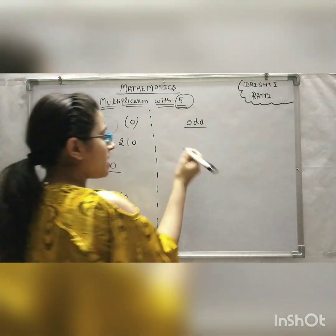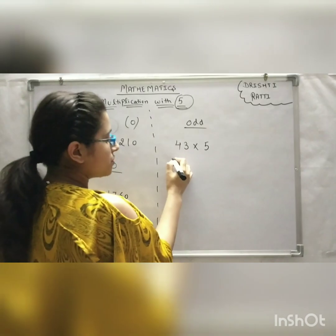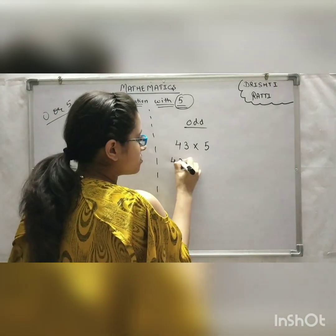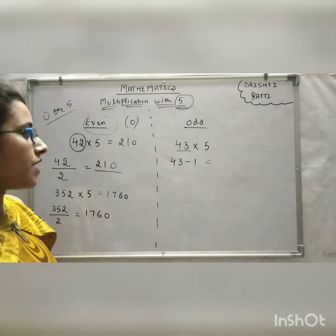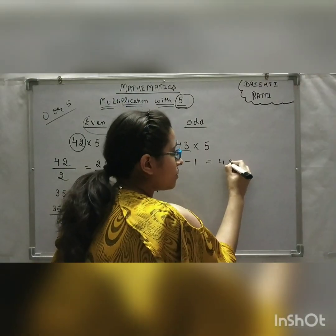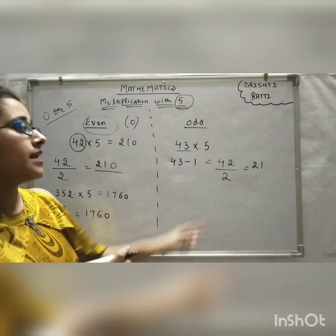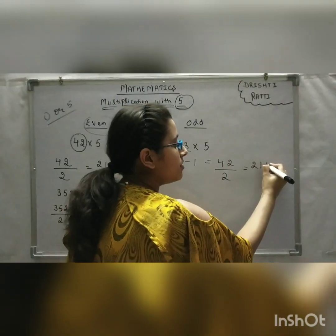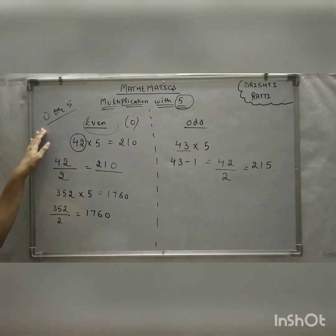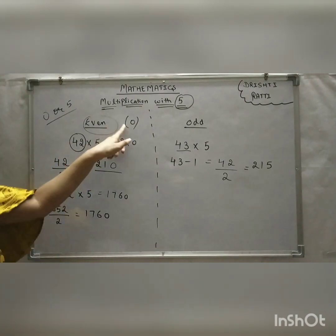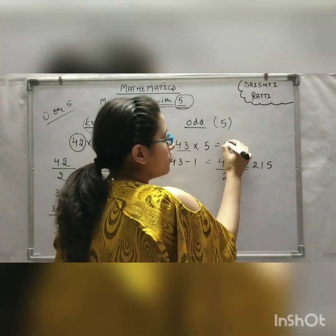Now let's move to odd numbers. For example, take 43 multiplied by 5. What you do is subtract 1 from the odd number: 43 minus 1 gives 42. Then divide by 2 and you get 21. Since it's an odd number, put 5 at the end. As I mentioned earlier, multiples of 5 end with either 0 or 5 — for even numbers put 0, for odd numbers put 5. So 215 is your final answer.